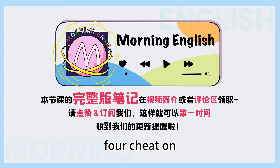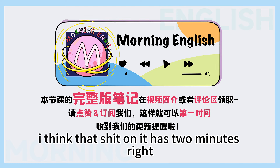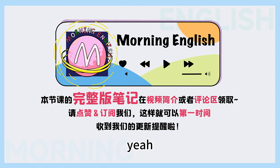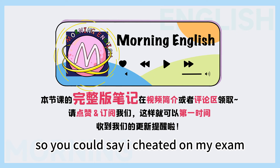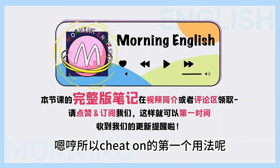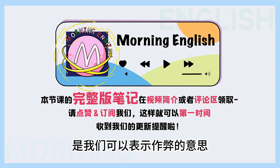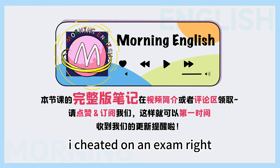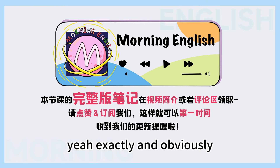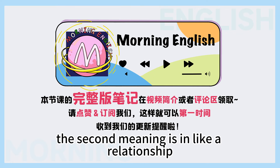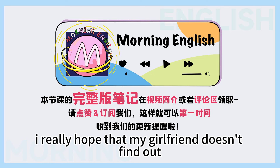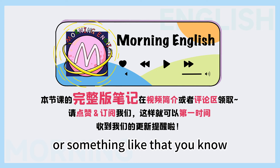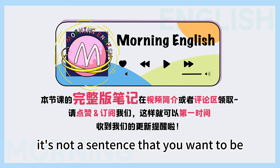Number four: cheat on. 第四个叫做 cheat on，I think cheat on has two meanings, right? Yeah, so you can cheat on something like a test or an exam. So you could say: I cheated on my exam. Cheat on的第一个用法呢，是我们可以表示作弊的意思，所以比如说，我在考试中作弊了，I cheated on an exam. And obviously the second meaning is in a relationship — in a sexual way. So you could say like: I really hope that my girlfriend doesn't find out I cheated on her. It's not a sentence that you want to be saying.